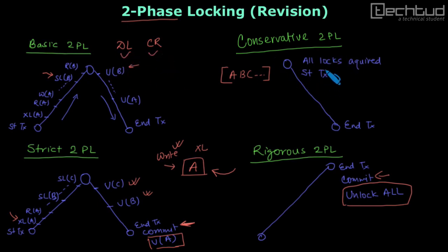But in conservative 2PL, all locks are acquired first. That's why we don't have deadlock problem but we do have cascading rollback situation. Deadlock is resolved here but cascading rollback is there. In strict 2PL, we take care of cascading rollback but deadlock is there and cascading rollback is taken care of.